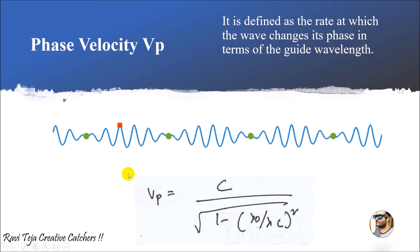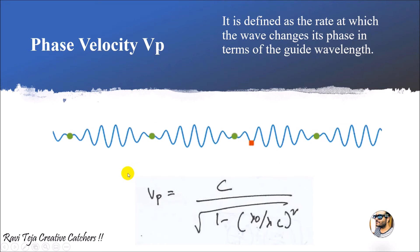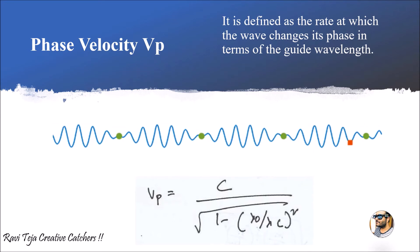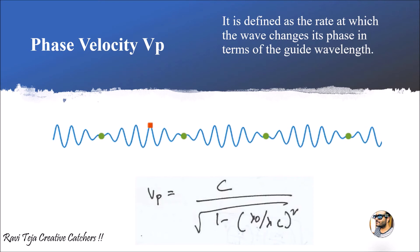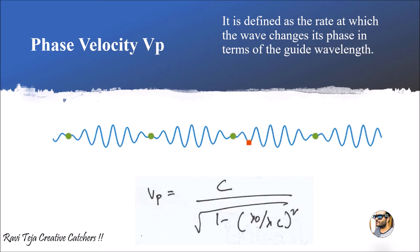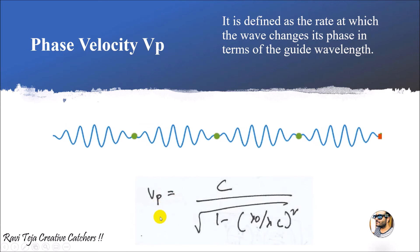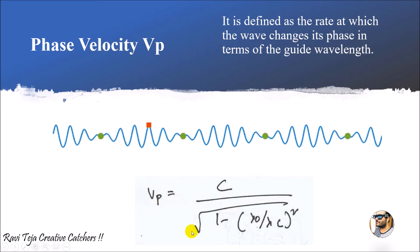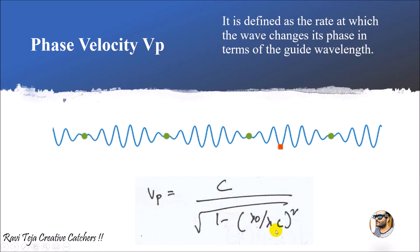Phase velocity vp is defined as the rate at which the wave propagating in a waveguide changes its phase — that is, changing from the positive cycle to the negative cycle. It is given by vp = c / √(1 − (λ₀/λc)²).